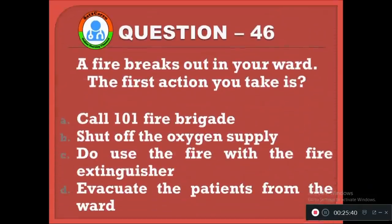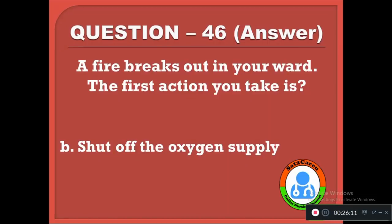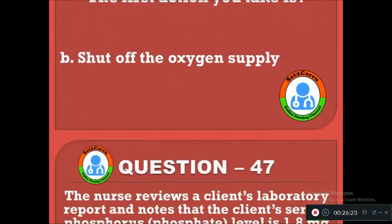Question 46: Fire breaks out in your ward. The first action you take is — option A: call 101 fire brigade, B: shut off the oxygen supply, C: douse the fire with a fire extinguisher, D: evacuate the patients. The correct answer is B — be calm and shut off the oxygen supply first, as oxygen supply in the pipes can increase the fire level. Then safely shift the patients.